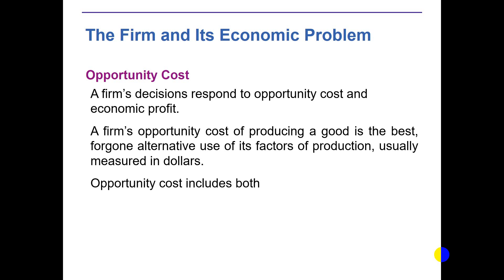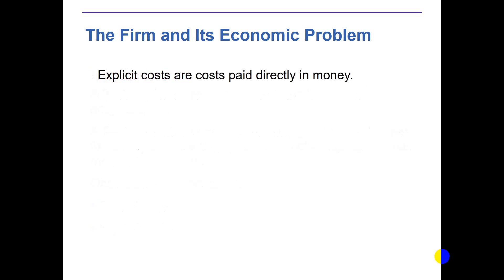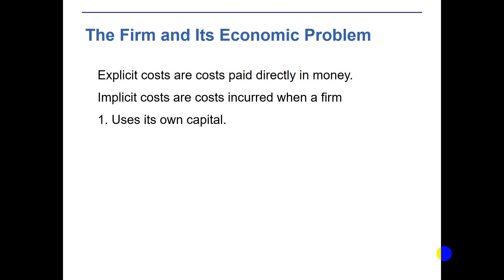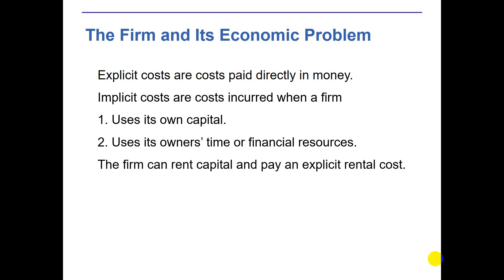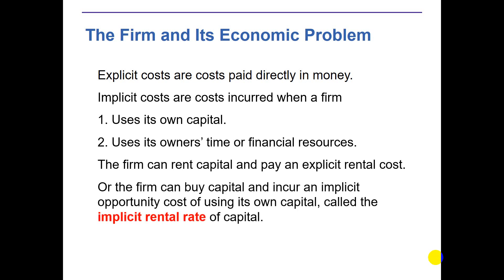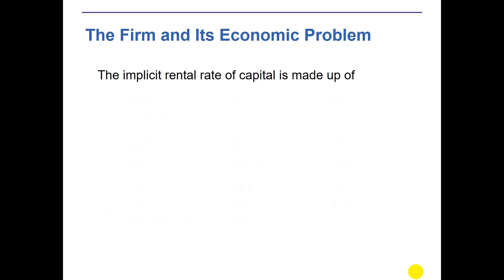The opportunity cost includes both explicit cost and implicit cost. Explicit costs are costs paid directly in money — the out-of-pocket costs. Implicit costs are costs incurred when a firm uses its own capital or its own financial resources. The firm can rent capital and pay an explicit rental cost, or the firm can buy capital and incur an implicit opportunity cost of using its own capital, called the implicit rental rate of capital. If they want to use their own resources, they also bear some opportunity cost.